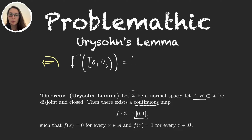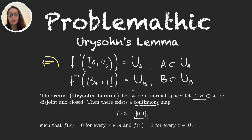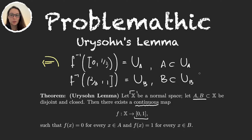Let's call this set U_A. So U_A is an open set in the topology of X and A is contained in U_A, because we're taking the preimage of [0, 1/3) and f(x) = 0 for every x in A. Similarly, we can take the interval (2/3, 1]. This interval is open in [0,1] with the subspace topology, so the preimage through F is also open — let's call it U_B. B is a subset of U_B because f(x) = 1 for every x in B. Also, U_A and U_B are disjoint, so this gives us that X is a normal space.